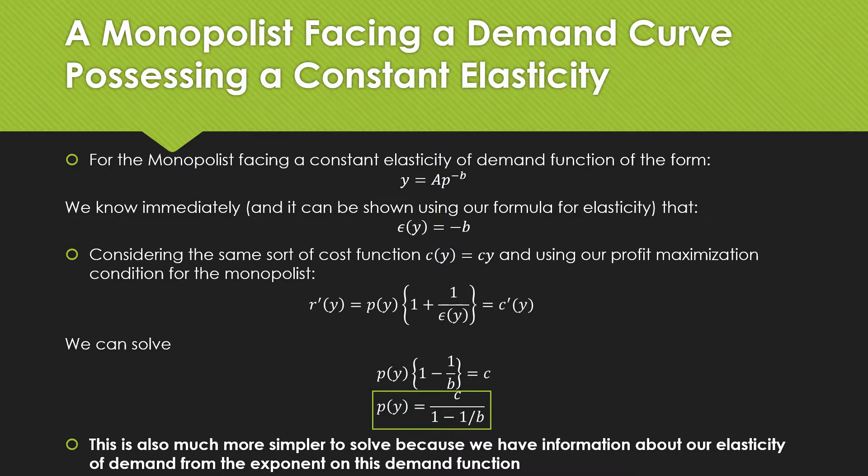Using a little bit of algebra, we find that our price is equal to c over (1 - 1/b). This is much simpler to solve for because we already have information about our elasticity of demand from the exponent on this demand function.